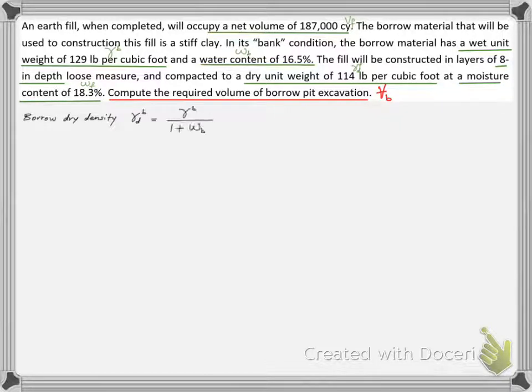To be able to relate the soil in its bank and compacted states, we need to calculate the dry density of the borrow soil using this formula that we derived in the lesson video. Using the borrow wet density and moisture content, we find the dry density to be 111 pounds per cubic foot.